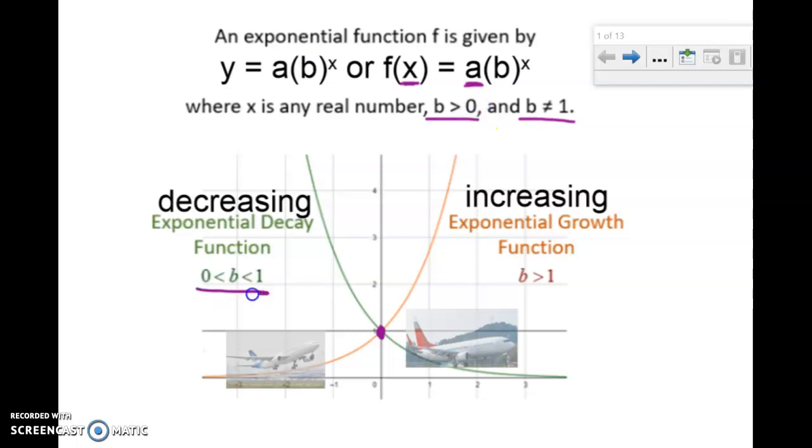So if it's between zero and one, that's going to cause it to go down, because think about it. If you multiply by a number that is smaller than one but bigger than zero, think of a half, think of a quarter, think of three-fourths, it's going to cause that amount to decrease.